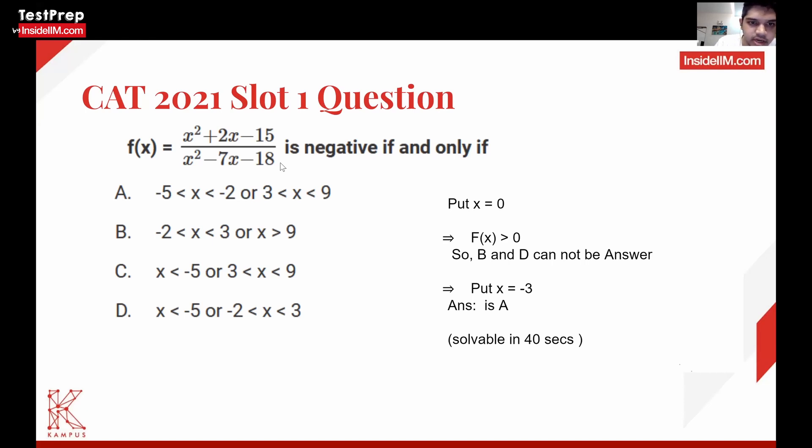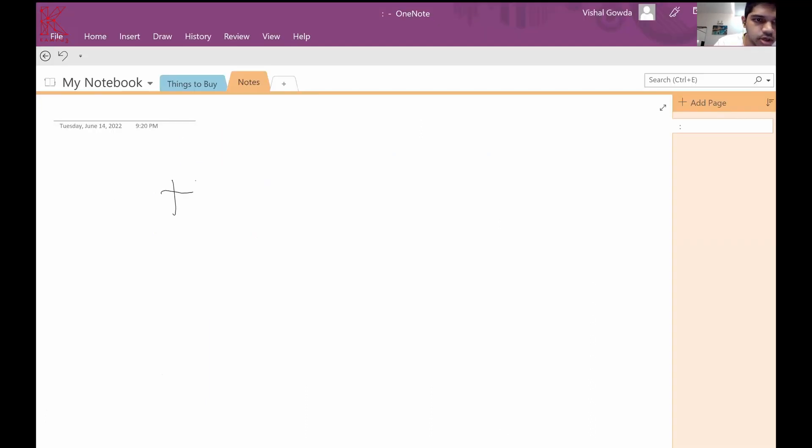Now look at A and C. Find a case that is included in either one of them but not in both. If I put x equal to 0 in that equation, I'll get 15 by 18. Through this we can eliminate two options, B and D.